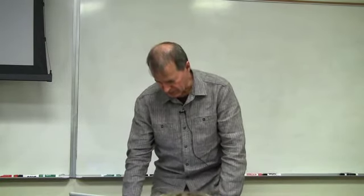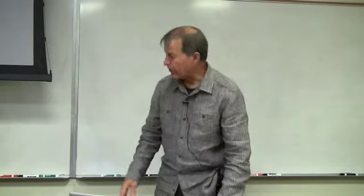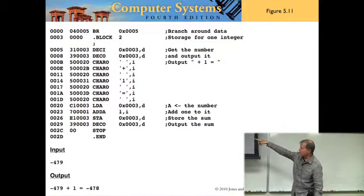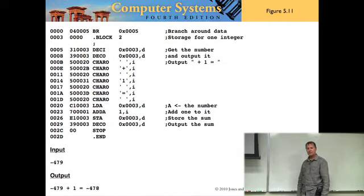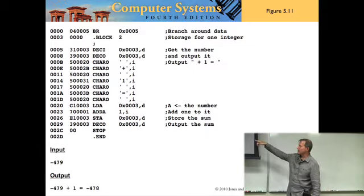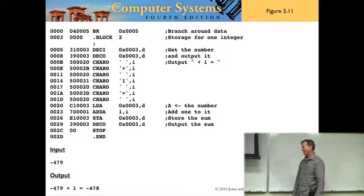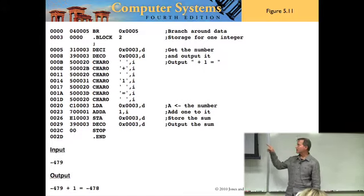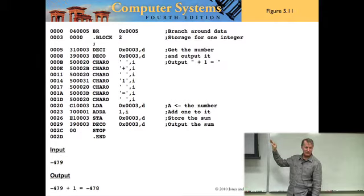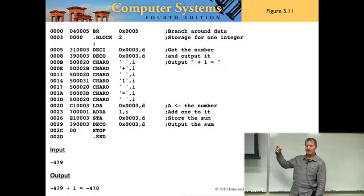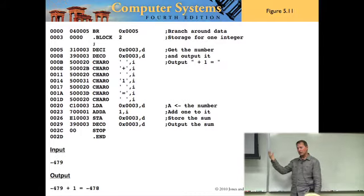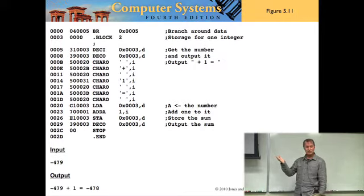That would be similar to figure 5.11, how you do character output — you just put the character and use immediate addressing. The other one was to actually use the character output instruction but put a decimal constant there instead of a character constant. The assembler will assemble it the same way, and if you look at the object code, the object code would be identical. It's the object code that determines what happens when the computer executes.